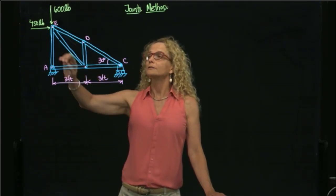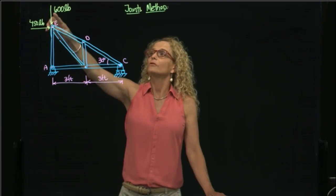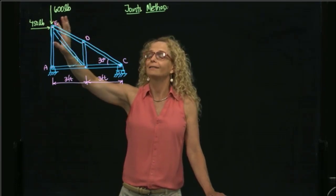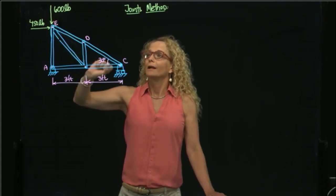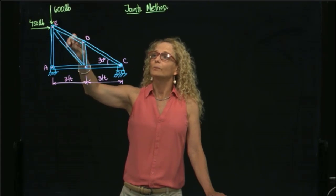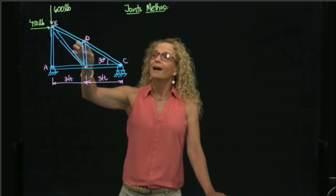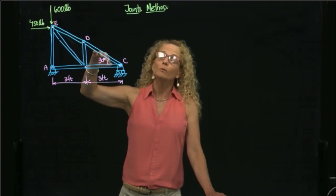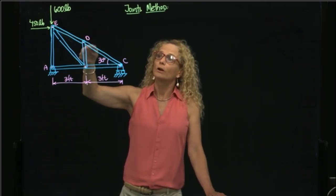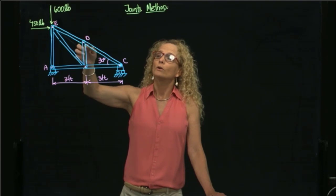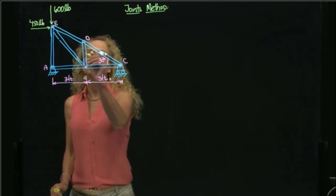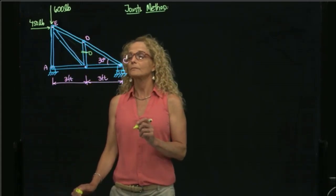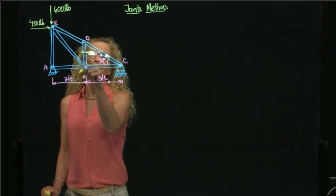To identify zero force members, we analyze each joint. At this joint we see three members and two external loads, so we cannot say anything about any of the members. At joint D, we see two collinear members and one that is non-collinear. If we add forces perpendicular to those two collinear members, we see that nothing balances this non-collinear member — therefore it is a zero force member.